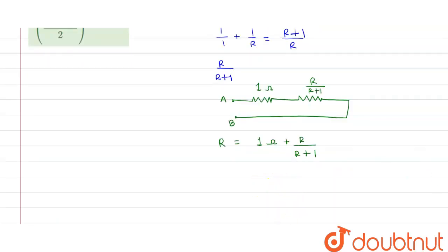So this can be written as, on solving this we get R square plus R equal to R plus 1 plus R. So this is equal to R square minus R minus 1 equal to 0.